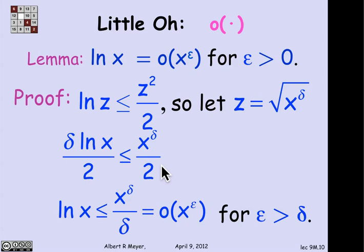But delta, as long as delta is less than epsilon, delta x to the delta is going to be little o of x to the epsilon, which means that x to the delta times a constant, namely 1 over delta, is also going to be little o of x to the epsilon. And I've just shown that log of x is little o of x to the epsilon as required.